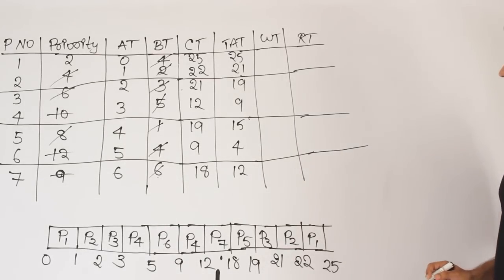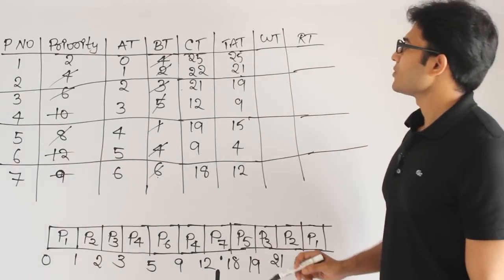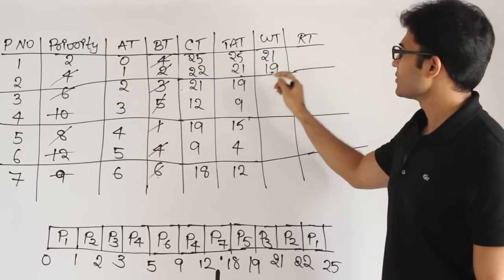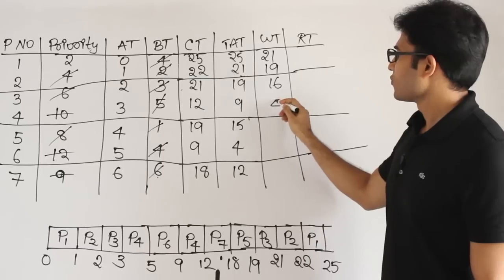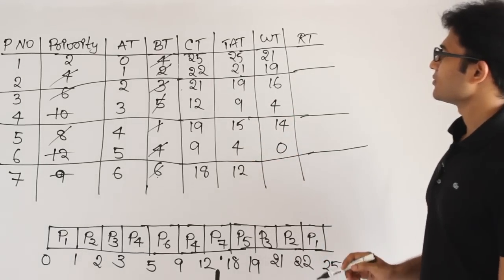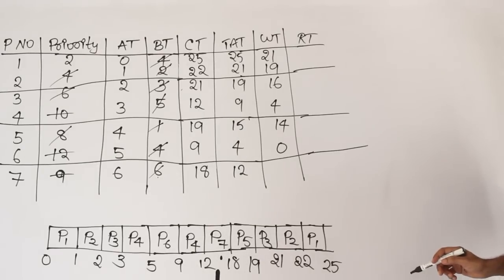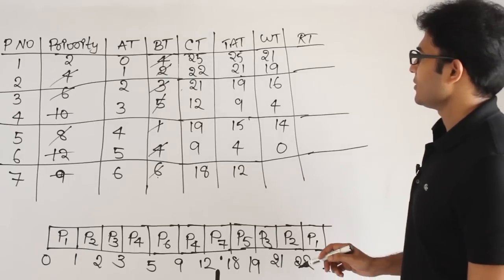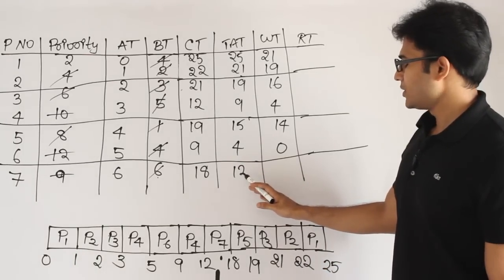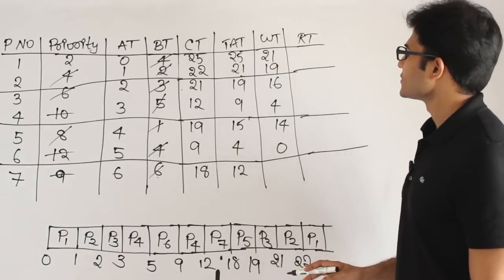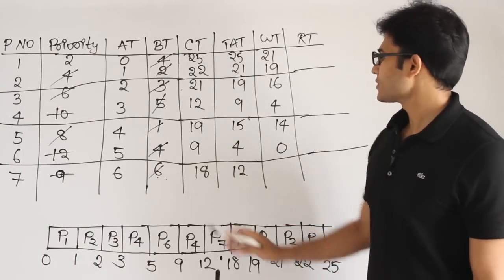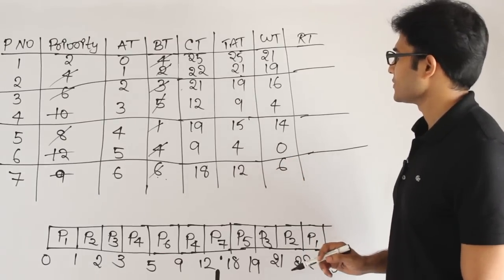Waiting time equals turnaround time minus burst time. So: P1=21, P2=19, P3=16, P4=4, P5=14, P6=0, P7=6. Waiting time of P6 is 0. The turnaround time for P7 minus its burst time of 6 gives waiting time of 6.